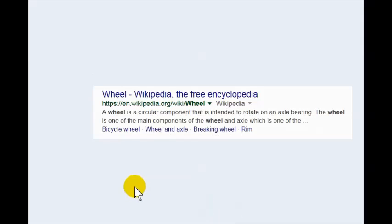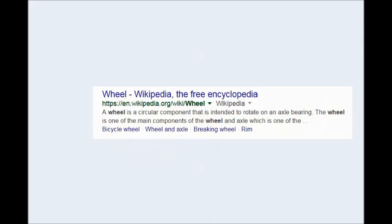Third machine comes from our third definition. The wheel comes from Wikipedia. The other two were dictionary.com. Sorry about that, let's give them their credit. A wheel is a circular component that is intended to rotate on an axle or bearing. The wheel is one of the main components of the wheel and axle, which is one of the bicycle wheels. It's safe to say I don't think we have a wheel in our description.